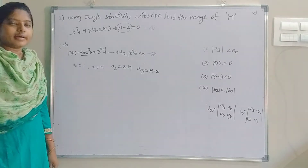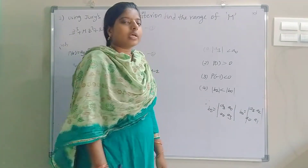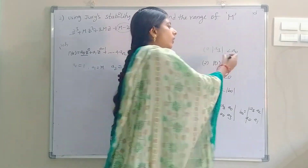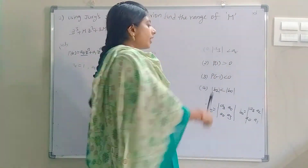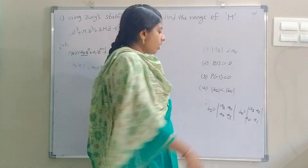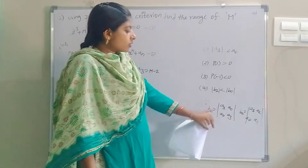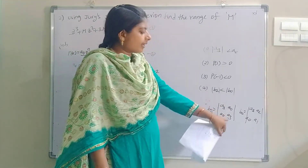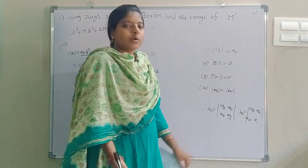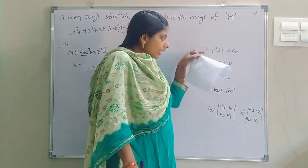In Jury's stability criteria there are four conditions. The conditions involve: a₃ ≤ a₀, P(1) ≥ 0, P(−1) ≤ 0, and B₂ ≤ B₀. Here B₂ is found from the matrix with entries a₃, a₀, a₀, a₃ using the determinant formula ad − bc, and B₀ uses a₃, a₂, a₁, a₀.